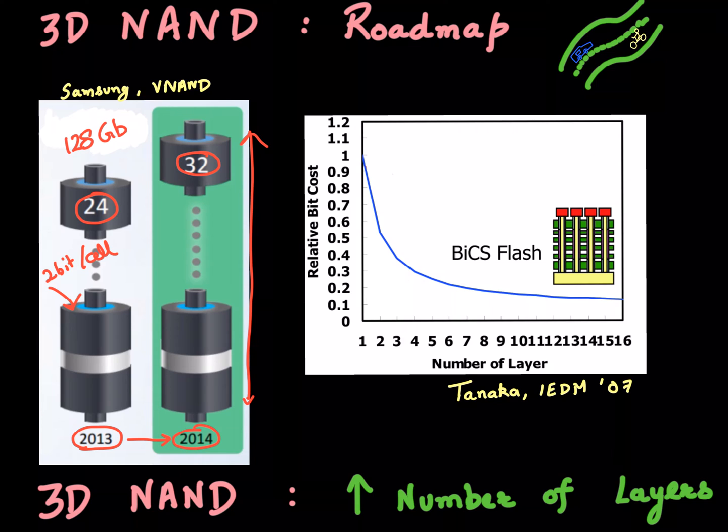If you calculate the capacity of the new chip, it would be equal to the capacity of the old chip multiplied by the number of layers in the new chip divided by number of layers in the old chip. Also, now you have 3 bits per cell versus 2 bits per cell, so we need to multiply by 3 by 2.